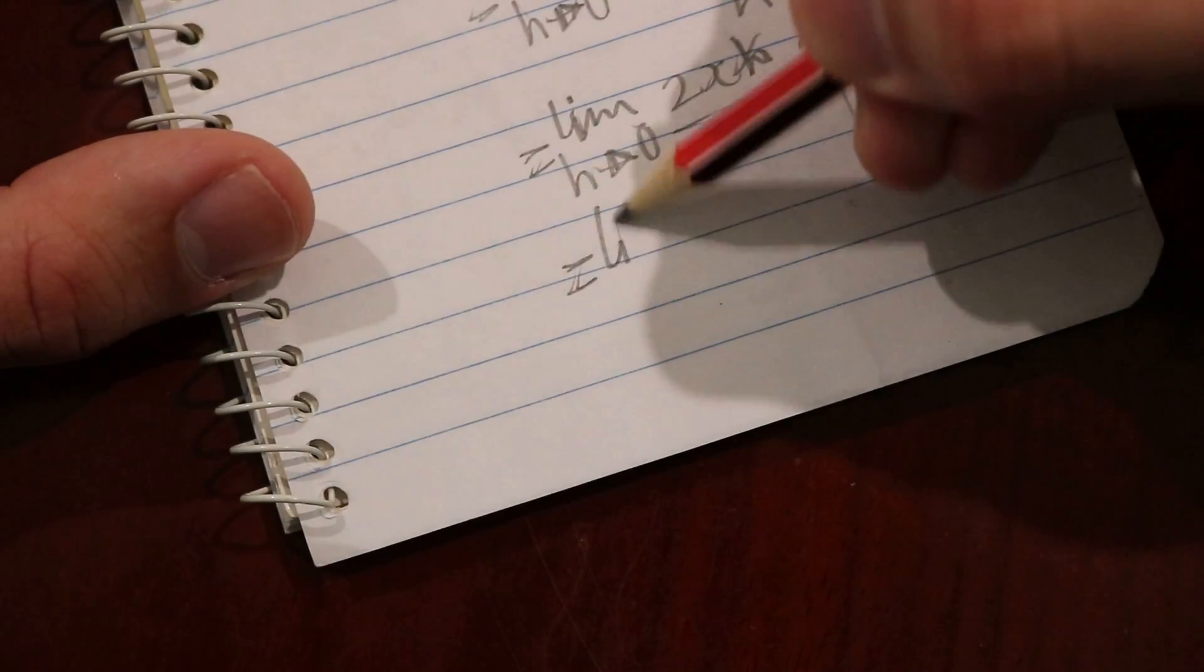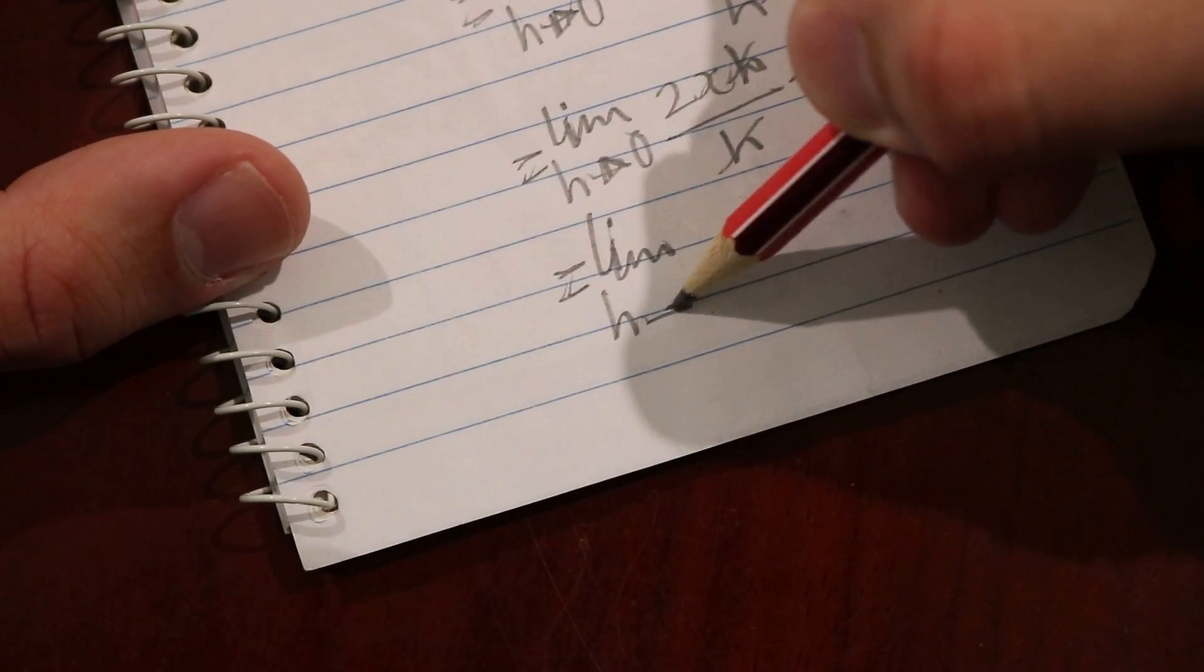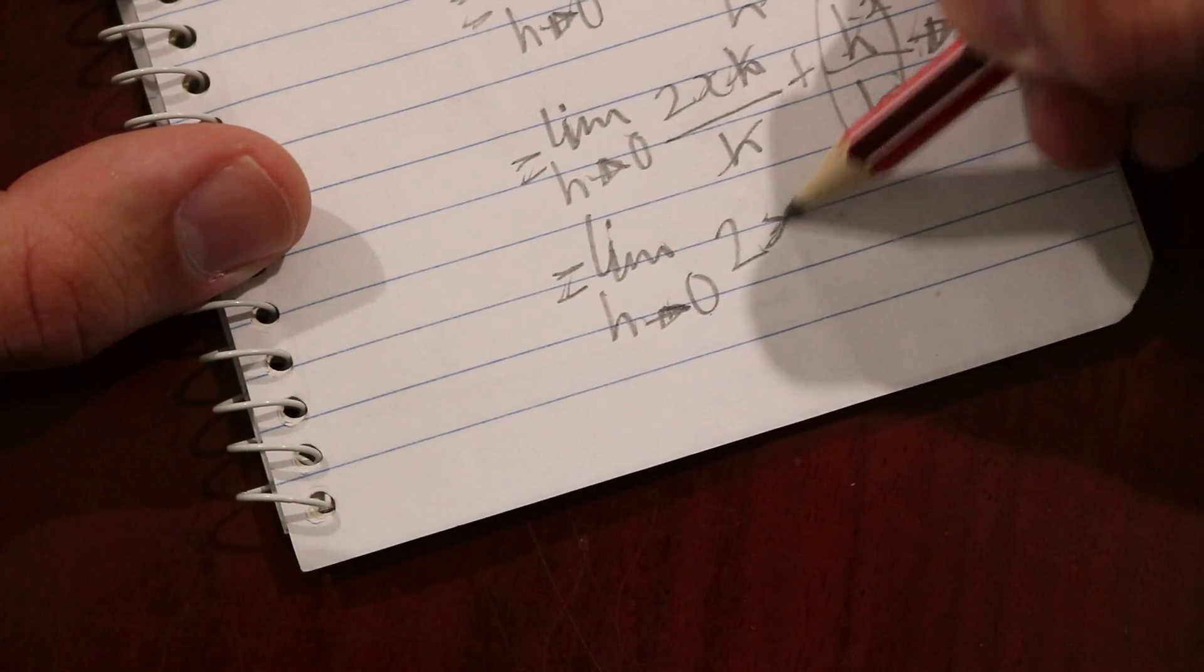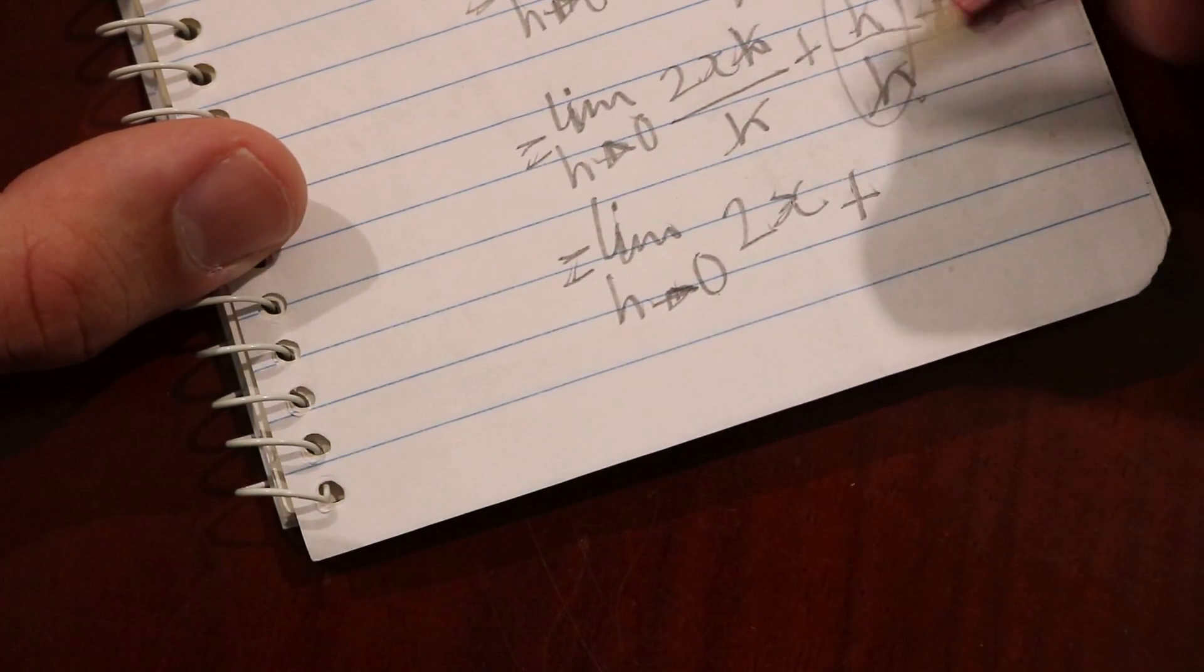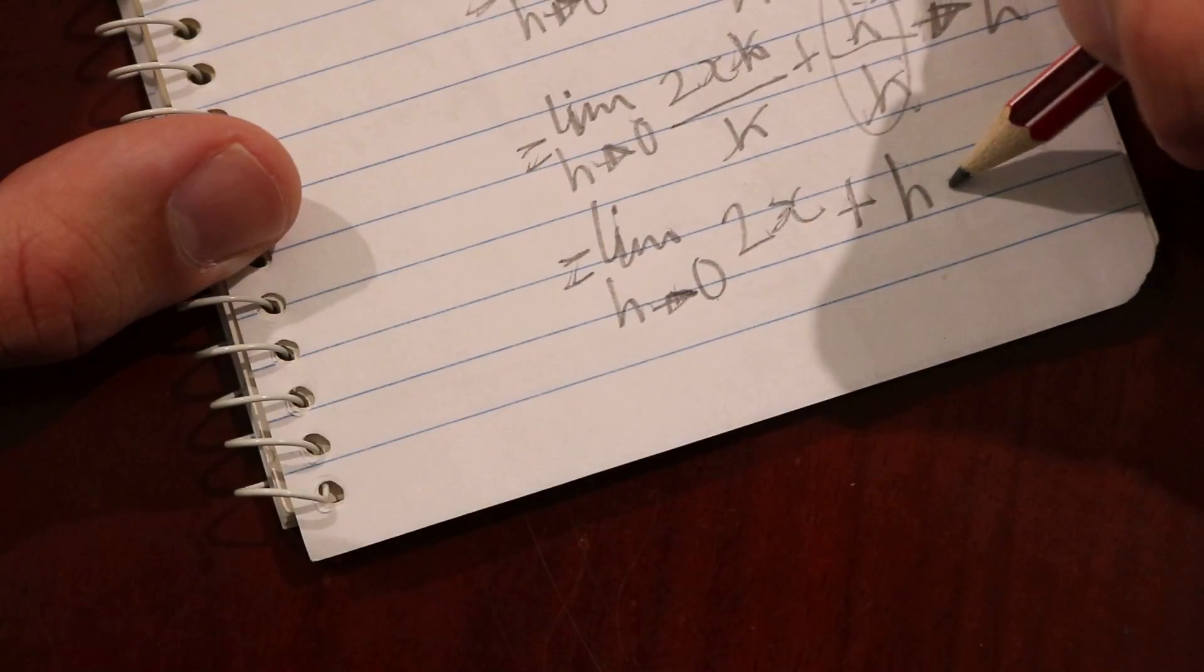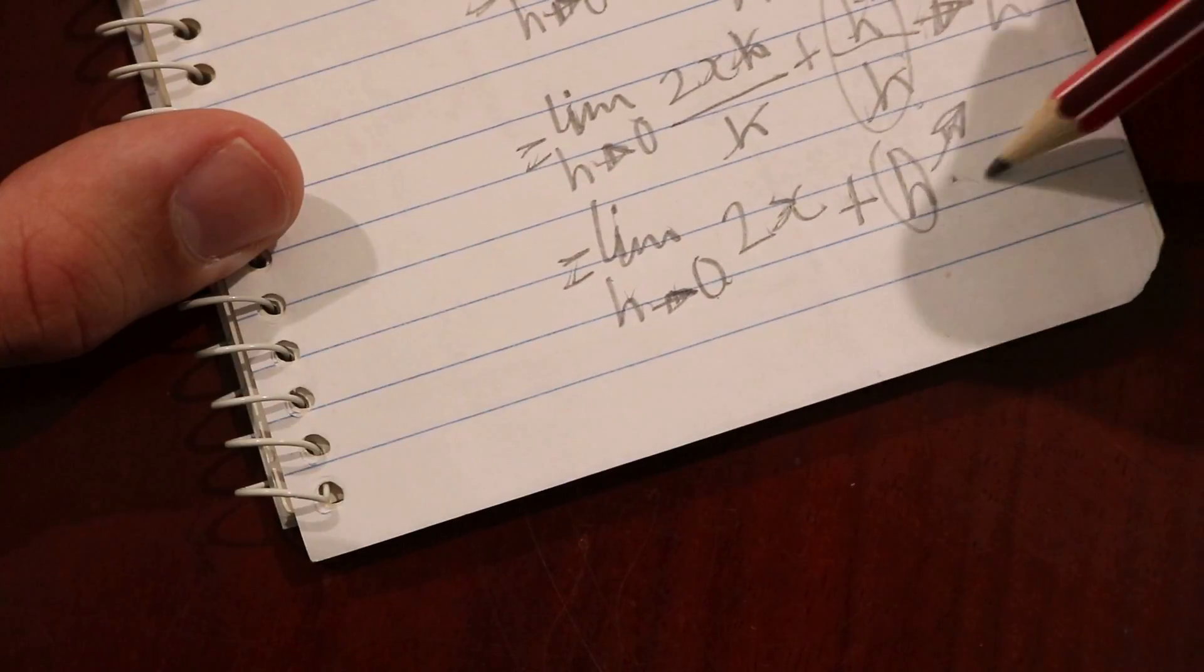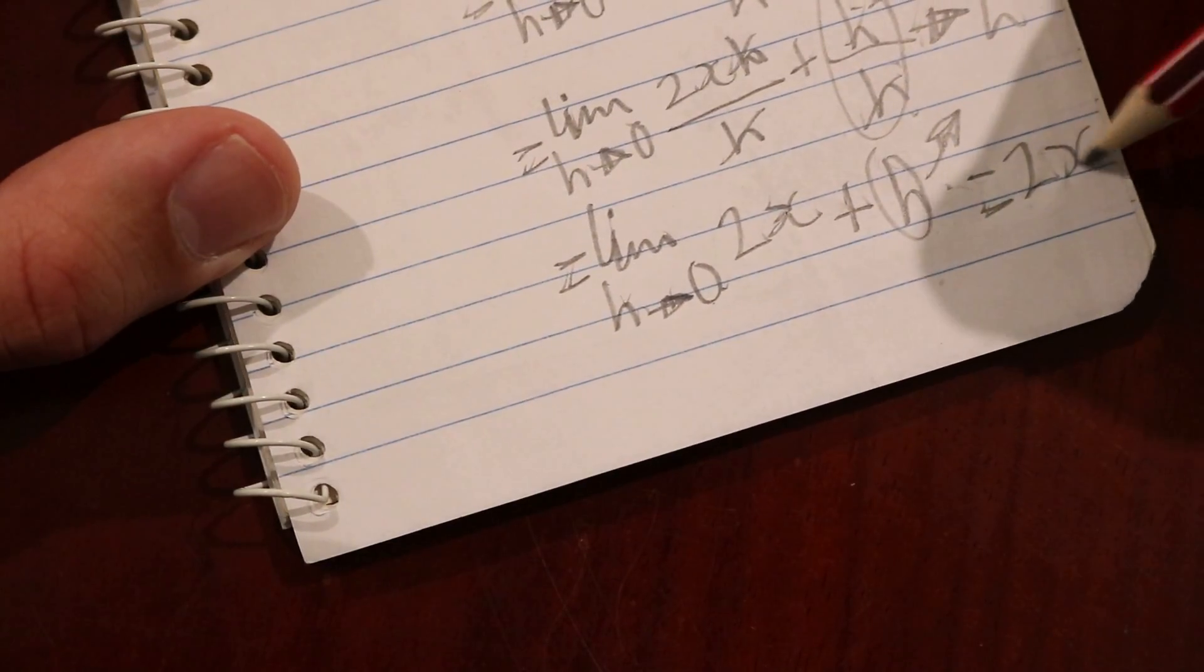This gives us the limit as h approaches 0 of 2x + h. When you substitute h = 0, this becomes 2x.